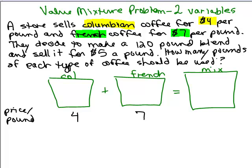And what about the mixture? Let's see. I'm going to sell the mixture for $5 a pound here. So my mixture is going to cost $5 per pound. Now, what do we know? How much is there in the mix? Well, we're going to make a 120-pound blend. So I know the total amount of pounds of coffee, total pounds of coffee is 120 pounds.